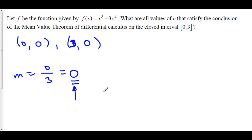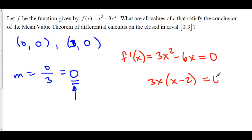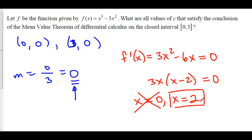We want to find all points from 0 to 3 that have a horizontal tangent line. The derivative f prime of x is 3x squared minus 6x. Setting this equal to 0, we factor out 3x to get 3x times (x minus 2), giving x equals 0 and x equals 2. Since 0 is not strictly between 0 and 3, that solution is excluded. Therefore x equals 2 satisfies the conclusion of the mean value theorem.